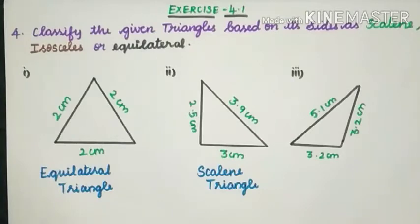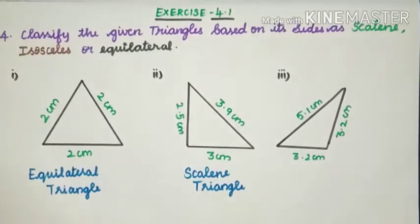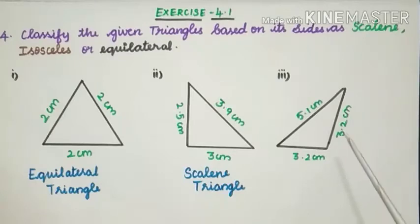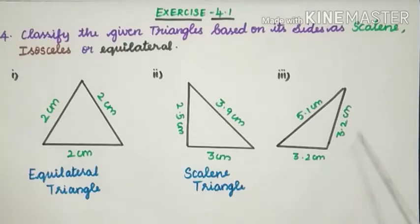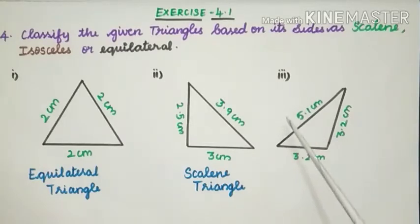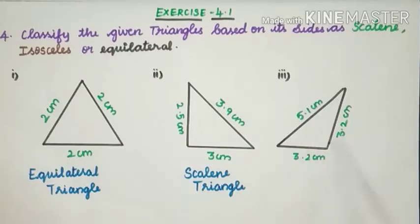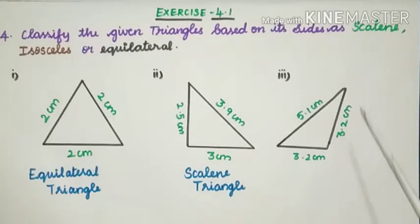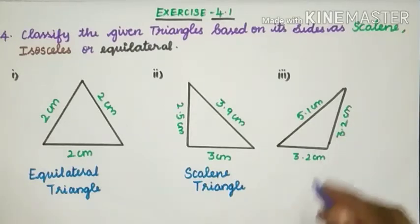Let's move on to the third one. The sides of the given triangle are 5.1 cm, 3.2 cm and 3.2 cm. Two sides of the triangle are equal and one side is different — 5.1 cm and the other two are 3.2 cm each. If any two sides of the triangle are equal in length, it is called an Isosceles triangle.